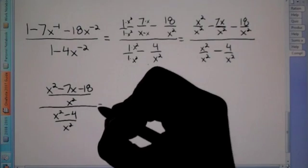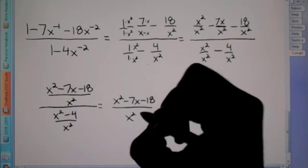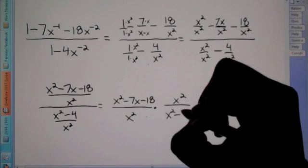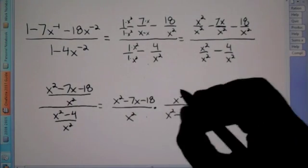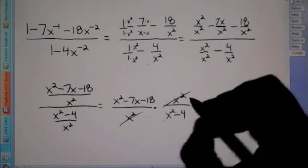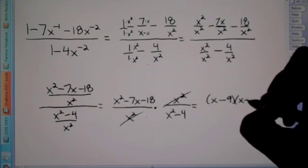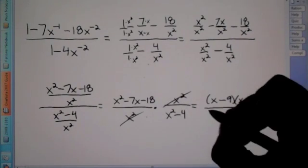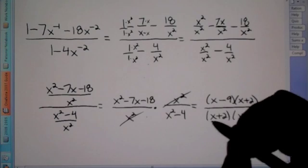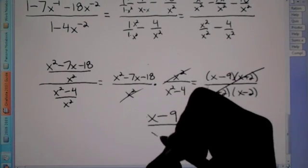From here, we change the division problem into multiplication. Like the previous problems, we flip the denominator — so it becomes x squared over x squared minus 4. Now you'll notice you're able to cross out the x squares. And if you look at this, you should be able to see that you can factor this. Factor the top to be x minus 9 times x plus 2. This one factors to x plus 2 times x minus 2, because it's in the format of a squared minus b squared. Now we can cross out the x plus 2's because it's the same top and bottom. So our final answer is x minus 9 over x minus 2.